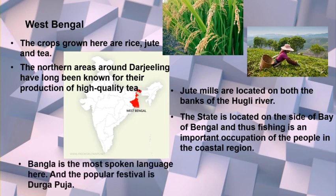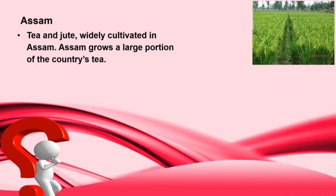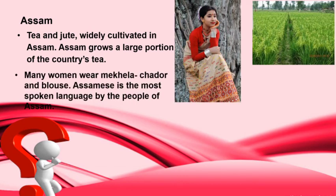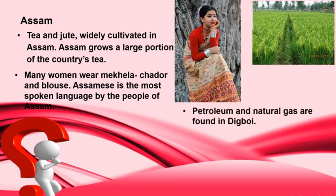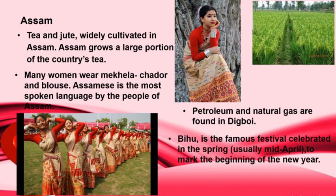Bangla is the most spoken language in West Bengal and the popular festival is Durga Puja. The last state is Assam, where tea and jute are widely cultivated. Assam grows a large portion of the country's tea. Women wear mekhela chador and blouse. Assamese is the most spoken language in Assam. Petroleum and natural gas are found in Digboi. Bihu is the famous festival celebrated in spring to mark the beginning of the new year.